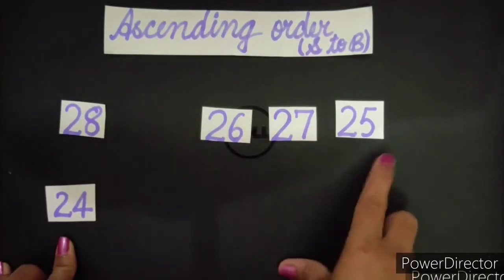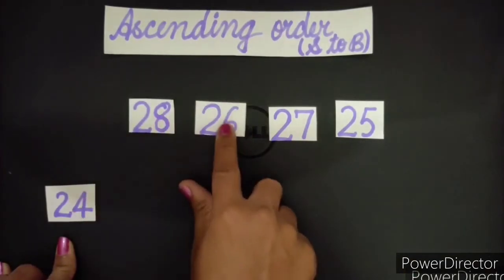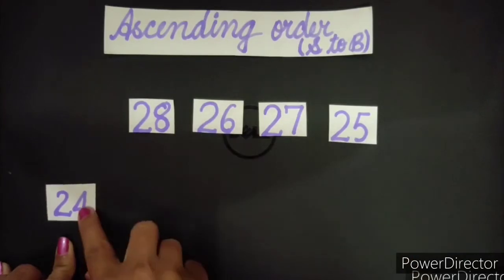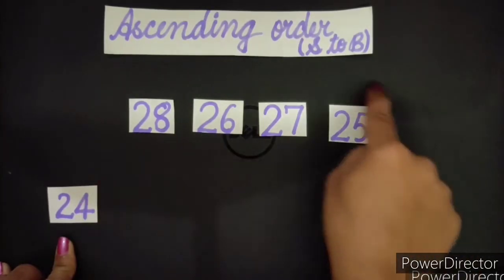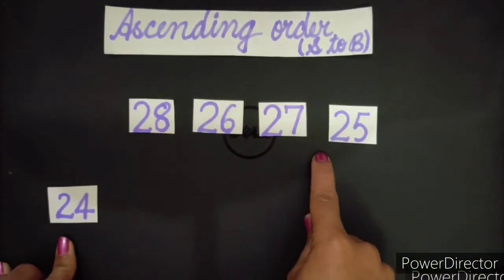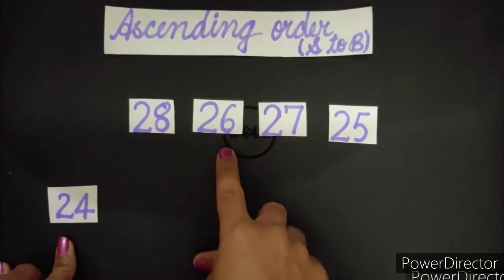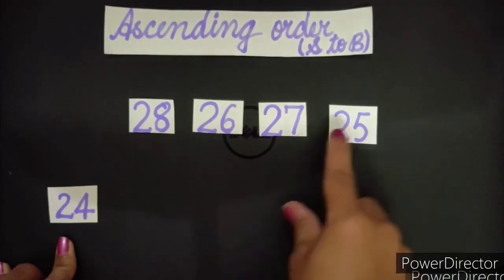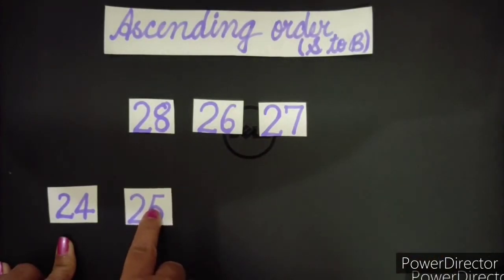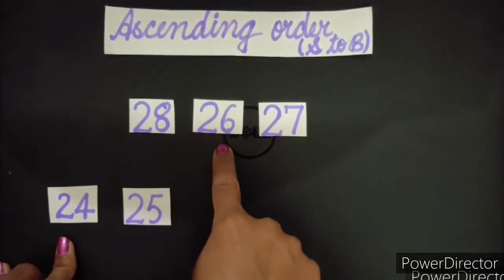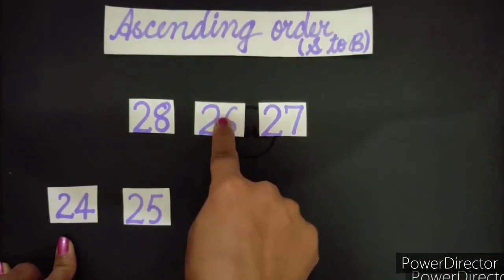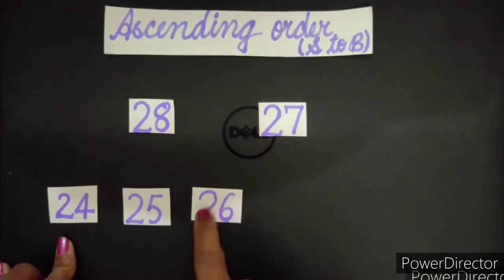Now let's find out the smallest out of all these. Now let's bring these together. Out of all these, which one is the smallest? Is 28? No. 26? No. 27? No. This 25.